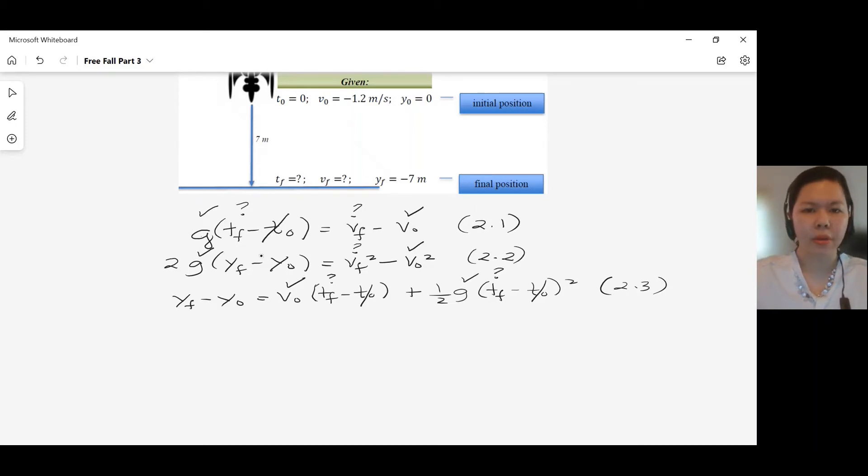Then our Y0 is 0 at the initial position, so we drop this one. Y final is given at the final position. It's negative 7 meters. By close inspection of the above checking, we see that you can use equation 2.2 to solve for the final velocity.